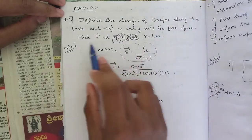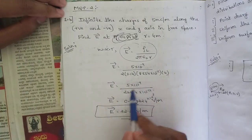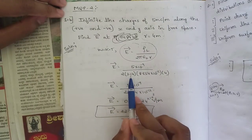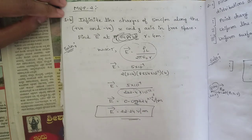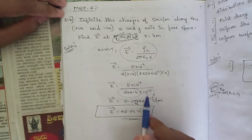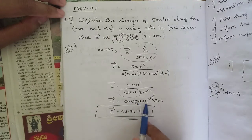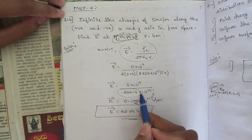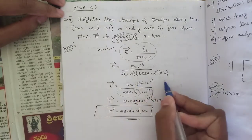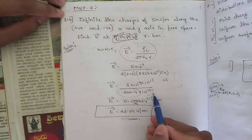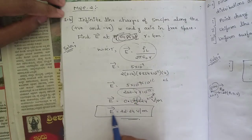The value of r is given as 4 meters. So E equals 5 into 10⁻⁹ divided by 2 into 3.14 into 8.854 into 4. Multiplying the denominator terms gives 222.4 into 10⁻¹². Dividing 5 by 222.4 gives 0.0224, and adjusting the powers of 10 gives 10³, shifting the decimal three places.